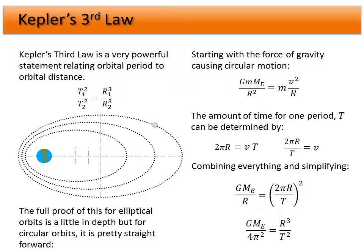The 2π quantity squared becomes 4π squared, and T becomes T squared. Since G times the mass of the central object and 4π squared are all constant, r cubed divided by T squared must also be constant. So for any other orbit at a different radius with a different period, r₁³ over T₁² equals r₂³ over T₂² — and the mass of the orbiting object drops out entirely.